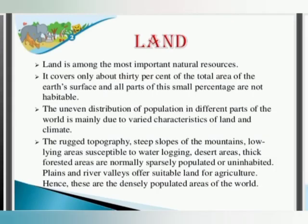Land is a common word — it is what we see here and there. Land is among the most important natural resources. It covers only about 30% of the total area of the Earth's surface, and all parts of this small percentage are not habitable. The uneven distribution of population in different parts of the world is mainly due to varied characteristics of land and climate.